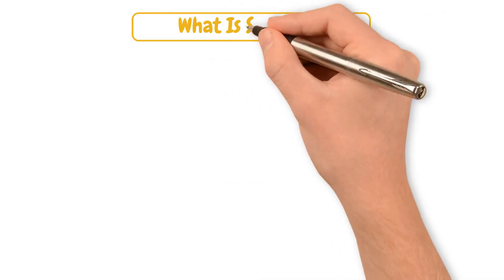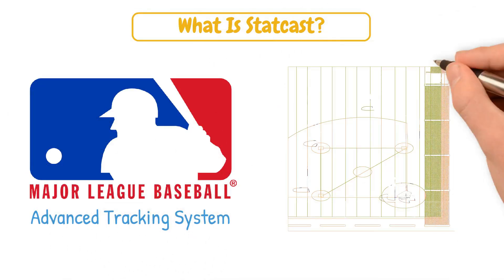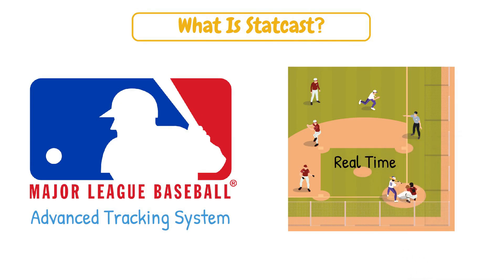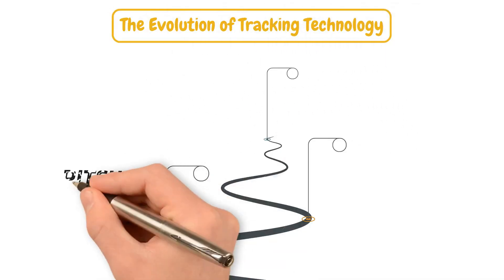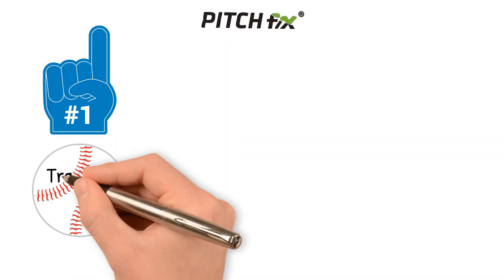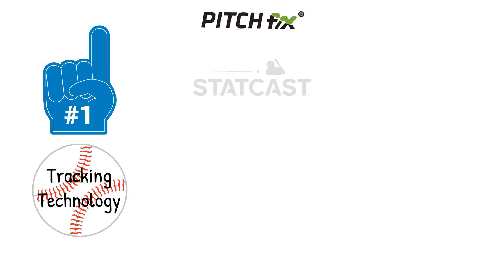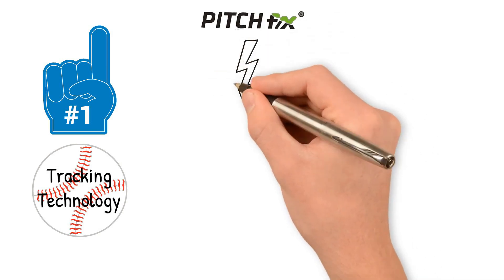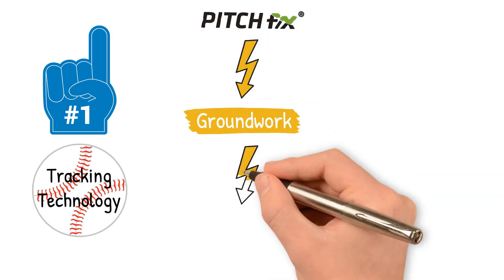StatCast is MLB's advanced tracking system, designed to measure every movement on the field in real time. But this didn't start overnight. PitchFX was rolled out in 2006, and it was the first iteration of ball tracking technology. StatCast had not yet been rolled out during this time, but the PitchFX system certainly laid the groundwork for what it would turn into.